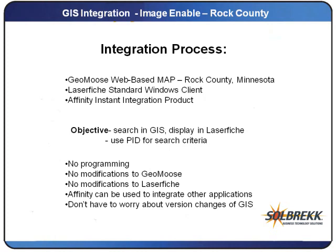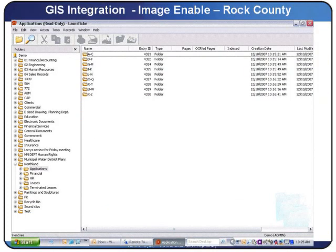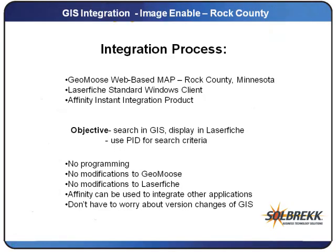Today I will be showing you a simple GIS integration. I will be using Rock County's GIS portal and Affinity, an instant integration tool that is going to be doing all the heavy lifting for us. We are going to select a parcel on the GeoMOS GIS portal and search for all documents in LaserFish that have that PID. This integration is done with no programming, modifications to GeoMOS or LaserFish.